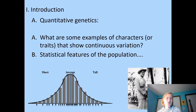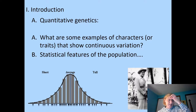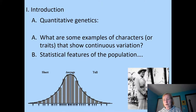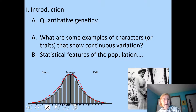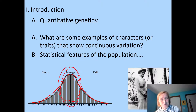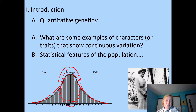What are some examples of characters or traits that show continuous variation? Height is a great example — there are very tall people, very short people, and most people fall in between. Most people fall into this average category, but there are people on both extremes. Other examples might be weight, skin color, IQ, and personality.